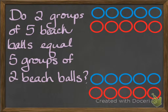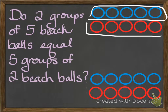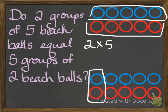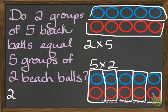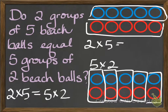Our first problem says: do two groups of five beach balls equal five groups of two beach balls? You can see up here at the top I have two groups — here's one group, and here's the second group of five beach balls. That's essentially saying 2 times 5. And then down on the bottom, I have five groups of two beach balls, and that's essentially 5 times 2. So does 2 times 5 equal 5 times 2? Yes, it is, because both of them equal 10. So 2 times 5 equals 5 times 2.